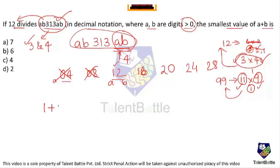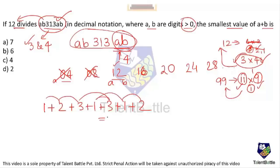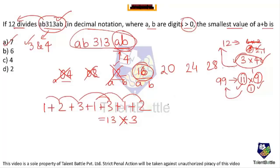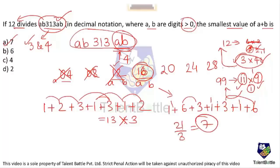If the last two digits are 16 (A=1, B=6): digit sum = 1+6+3+1+3+1+6 = 21, and 21 ÷ 3 = 7, so it is divisible by 3. Since the last two digits 16 are also divisible by 4, the number AB313AB is divisible by 12. Therefore A=1, B=6, and A + B = 7. The answer is option A.